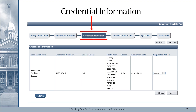On the next page, called Credential Information, make sure that all the information is correct and in the correct place. For example, your facility's endorsements may not be in the correct area and might be listed in the restrictions box. Changes cannot be made at this point, so if there are any discrepancies, contact our licensing unit to make the fix. In the last column under Requested Action, be sure to select Renew. Then use the Next button to save and move on to the next page.